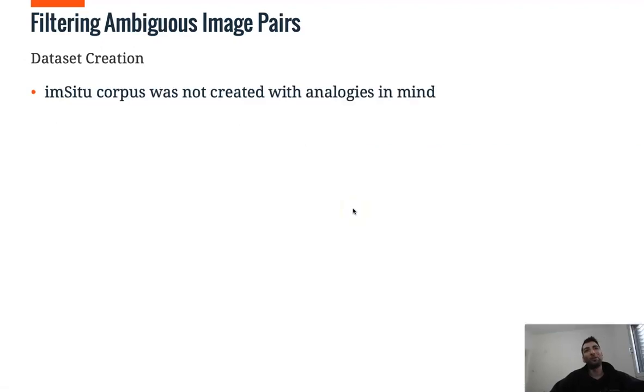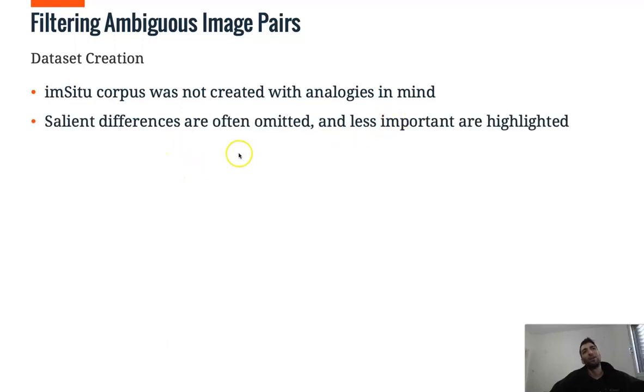Now, the problem with this strategy to create analogies data set is that the IMSIS corpus was not created with analogies in mind. Salient differences are often omitted, and less important ones are highlighted in the visual semantic annotations.